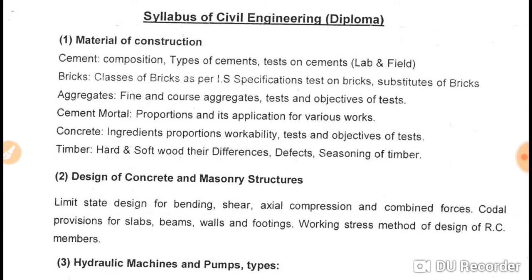Next is the types of cement. There are 10 to 12 types — OPC, PPC, blast furnace slag, low heat cement, modern Portland cement, white cement, and more. You should understand for what purpose each type of cement is used. For example, for a canal you can use PPC or sulfate resisting cement. They may ask questions on the type of cement.